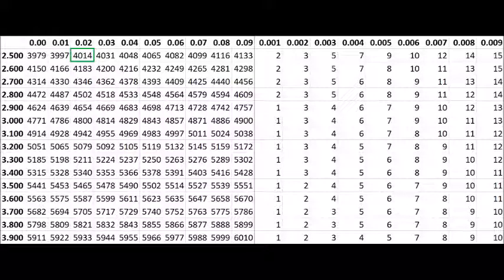That value for the log of 2.52 is shown boxed in green, rounded to four digits past the decimal. It should match what we just saw on the previous screen.